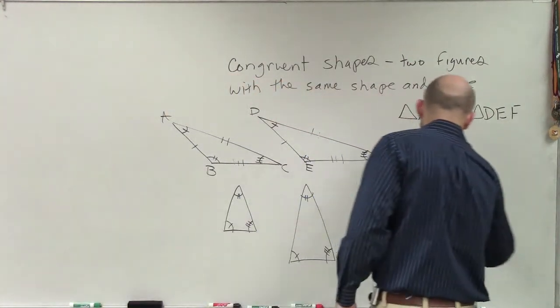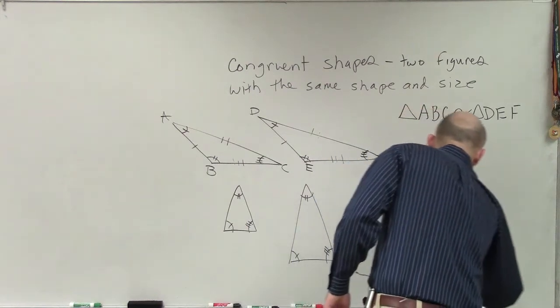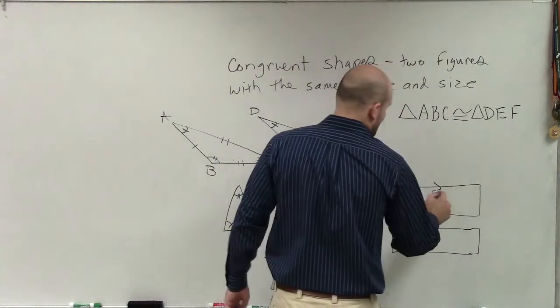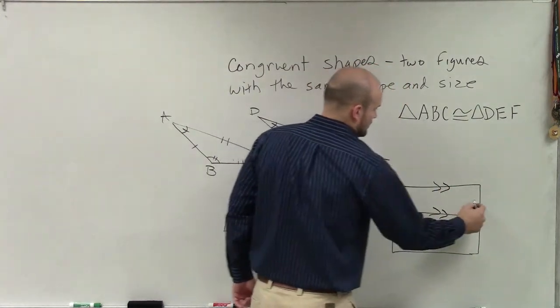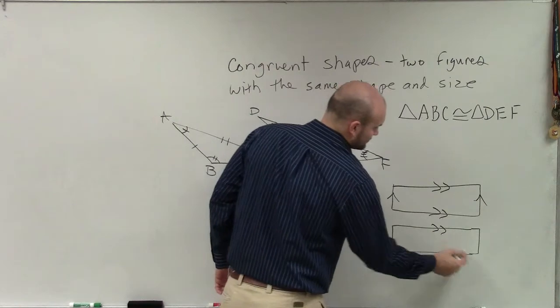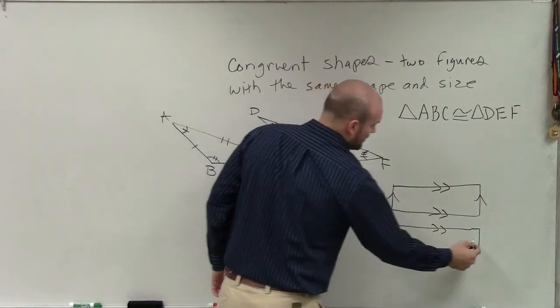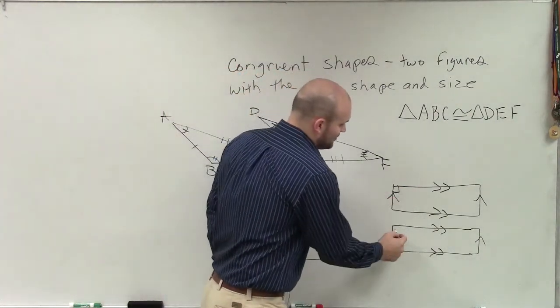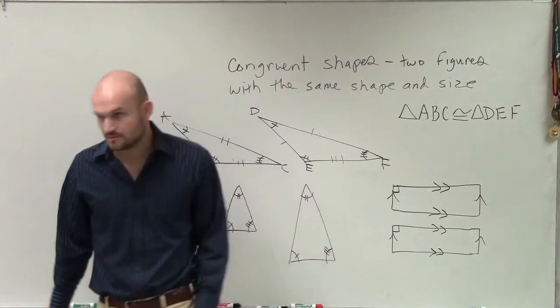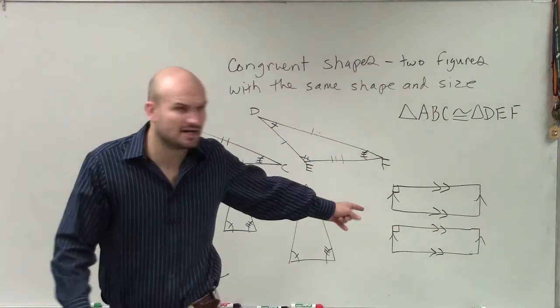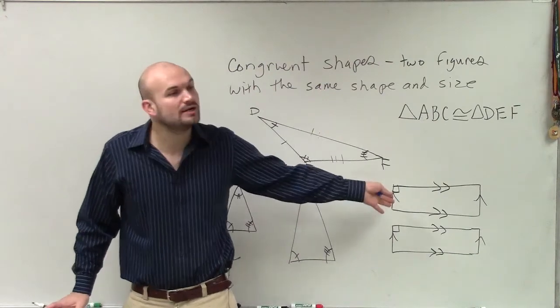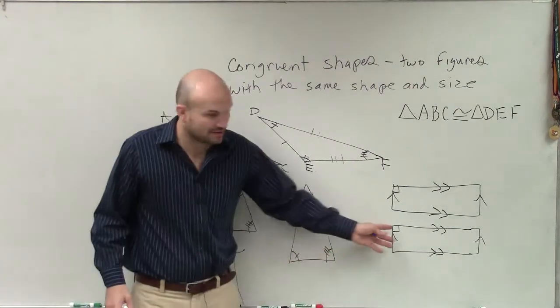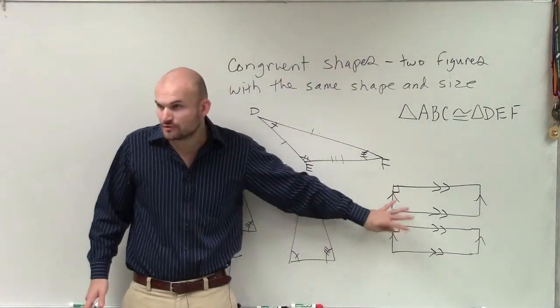Another thing that very commonly happens, students, is a lot of times they see parallel lines. Now, these figures look like they're congruent, right? And I'll even say, maybe they both have right angles, so their angles are equal. However, do parallel lines tell you that those side lengths are equal to each other? No. All the parallel lines do is tell you that those side lengths, if extended indefinitely, would never intersect each other.